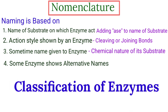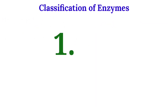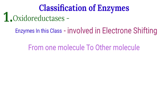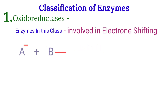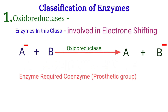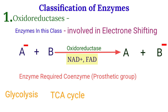The first class of enzymes is oxidoreductases. Enzymes in this class are involved in electron shifting from one molecule to another. The shifting of electrons changes the charge on the molecule. These enzymes require a coenzyme such as NAD or FAD. We will study more about them in glycolysis, the TCA cycle, or amino acid metabolism in later classes.